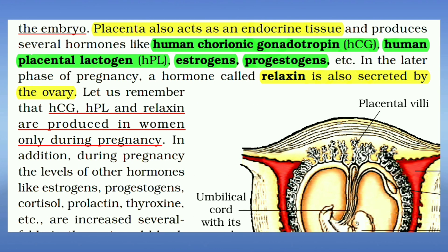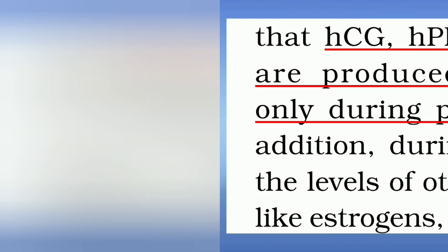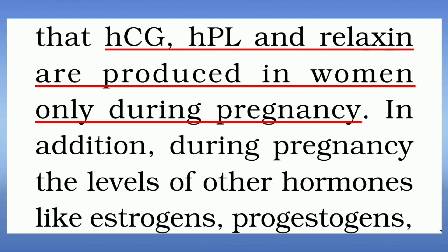The placenta also acts as an endocrine tissue and produces several hormones like human chorionic gonadotropin (HCG), human placental lactogen (HPL), estrogens, and progestogens. Relaxin is also secreted by the ovary. HCG, HPL, and relaxin are produced in women only during pregnancy.